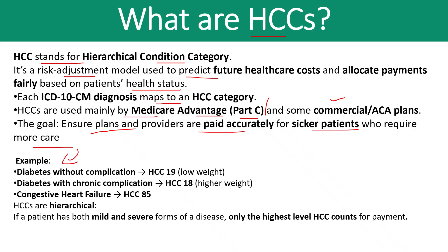For example, in HCC mapping: diabetes without complication maps to HCC code 19, and diabetes with chronic complication maps to HCC 18. HCC 19 refers to a lower weightage, while HCC 18 with chronic complication refers to higher weight. Similarly, CHF — congestive heart failure — has HCC code 85.